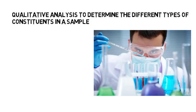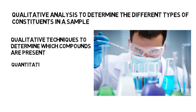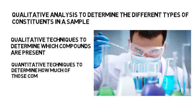To put it simply, if you have an unknown sample, you use qualitative techniques to determine which compounds are present and quantitative techniques to determine how much of those compounds are present.